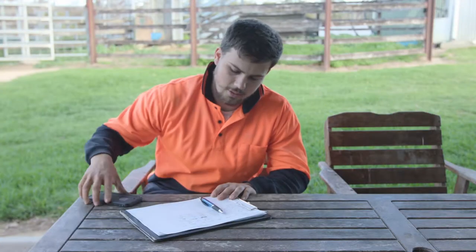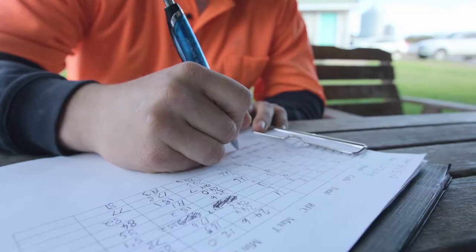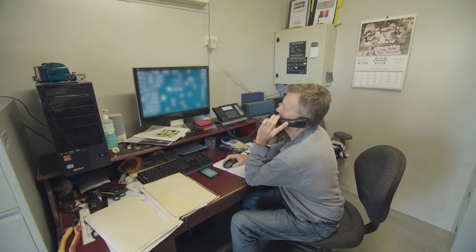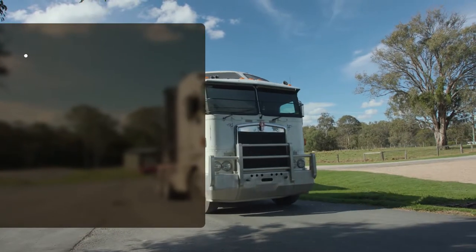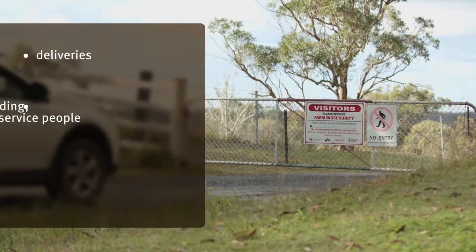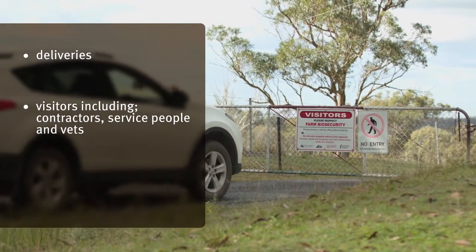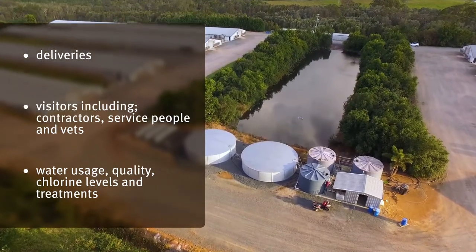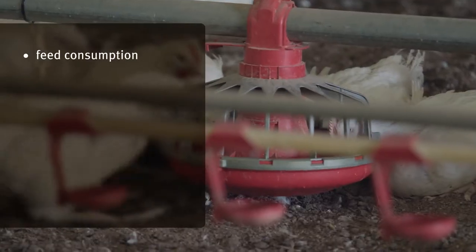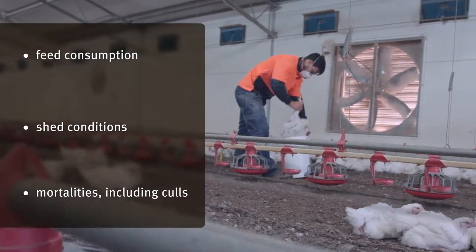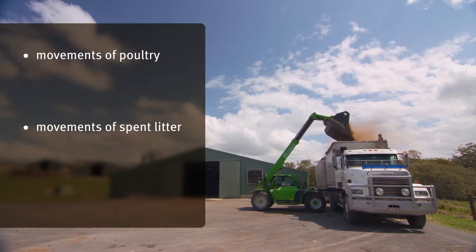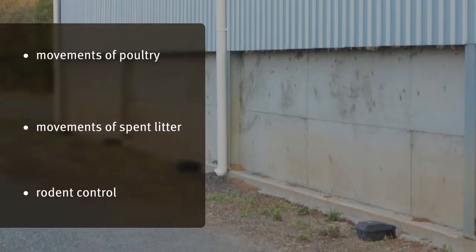Keeping routine records is important for production and performance purposes and also for demonstrating that you've met your biosecurity duty and obligations. Always keep records of deliveries, visitors including contractors, service people and vets, water usage, quality, chlorine levels and treatments, feed consumption, shed conditions, mortalities including culls, movements of poultry, movements of spent litter and rodent control.